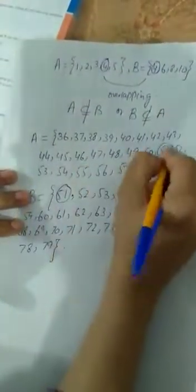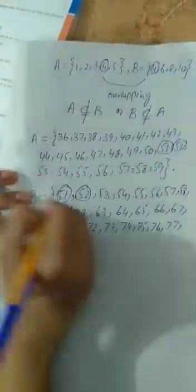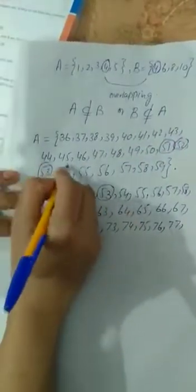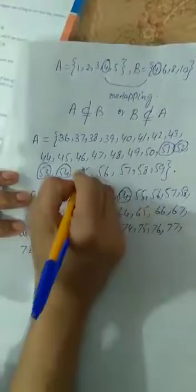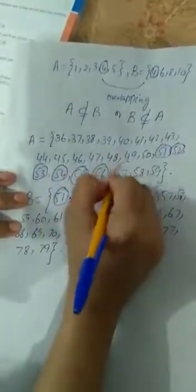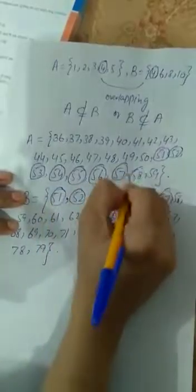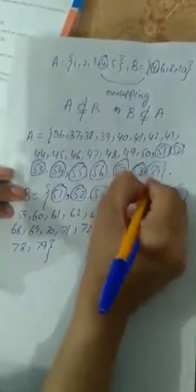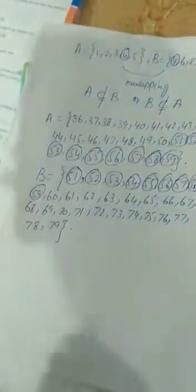Let's see here, elements 51, 52, 53, 54, 55, 56, 57, 58, 59 are common. They are common elements.